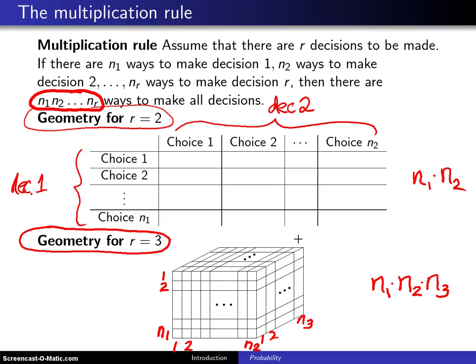and you would have n1 times n2 times n3 times n4 different ways of making all decisions. The next few slides contain some examples that illustrate the multiplication rule.